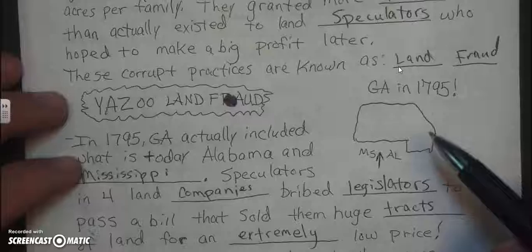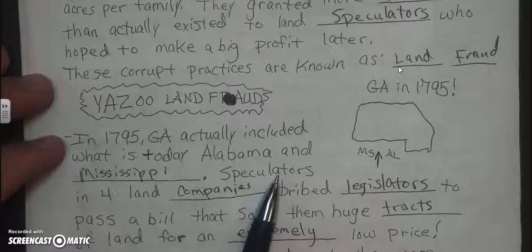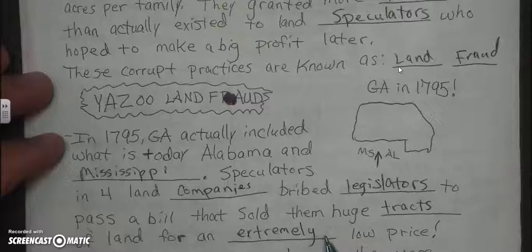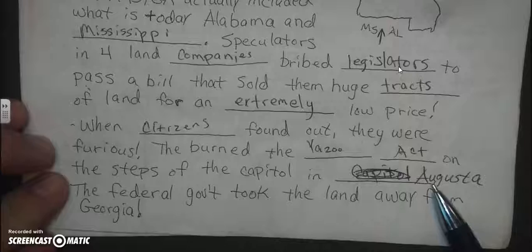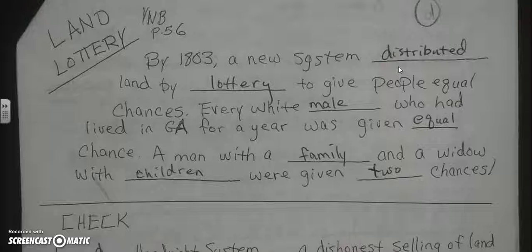One land fraud we talked about was the Yazoo land fraud. In 1795, Georgia included what's today Alabama and Mississippi. Speculators — people who buy land to sell it for a profit later — and four land companies bribed legislators to pass a bill that sold them huge tracts of land for an extremely low price. When citizens found out, they were furious. They burned the Yazoo Act on the steps of the capital in Augusta. The federal government took the land away from Georgia and eventually created what is today Mississippi and Alabama.